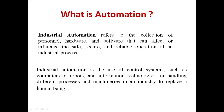First, we will look at what industrial automation is. Industrial automation refers to the collection of hardware and software that can affect or influence the safe, secure, and reliable operation of any industrial process. PLCs and various instruments used in industrial processes are hardware, while PLC programming software and SCADA software are the software components. Together they enhance industrial automation and ensure safety, as most controlling is done in the control room itself.